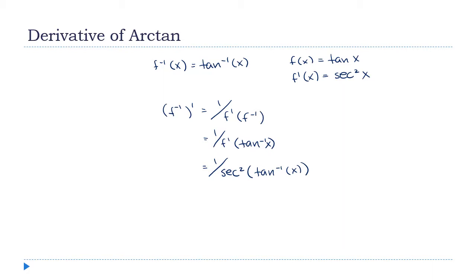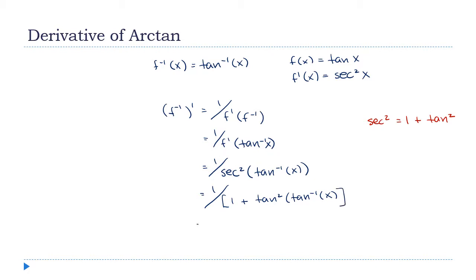I'll take a slightly different approach here and use the Pythagorean identity: secant squared equals 1 plus tangent squared. So this becomes 1 over 1 plus tangent squared of the inverse tangent of x. The tangent of the inverse tangent of x is just x — they're inverse functions, they cancel each other out. So the derivative of the inverse tangent is 1 over 1 plus x squared.